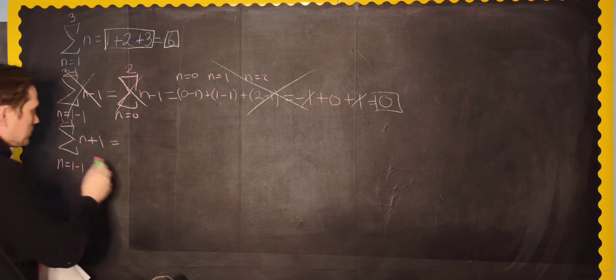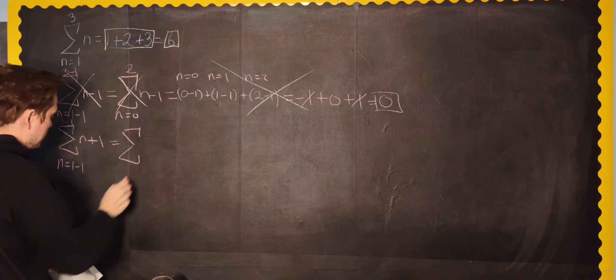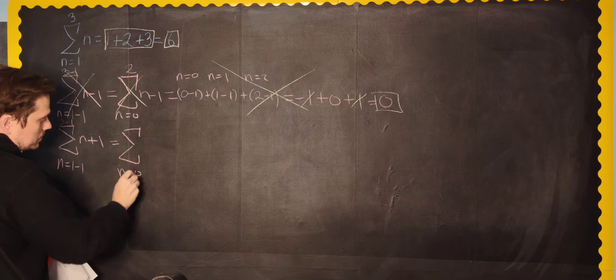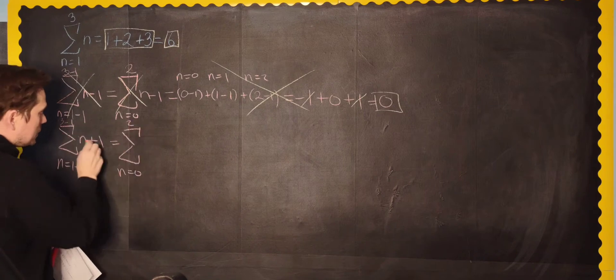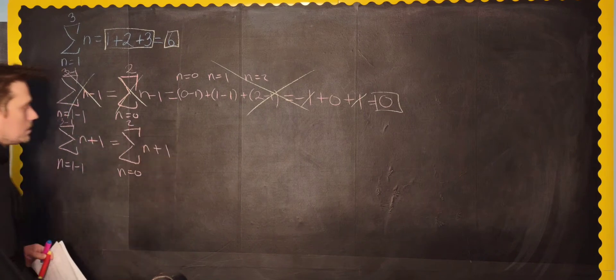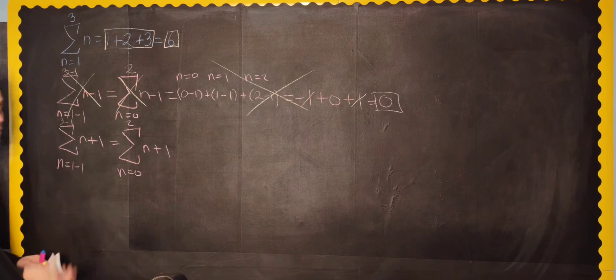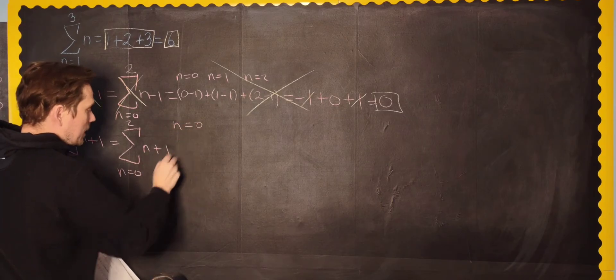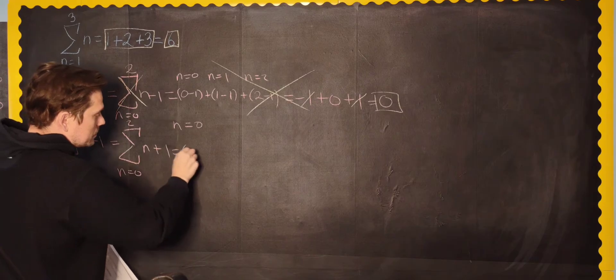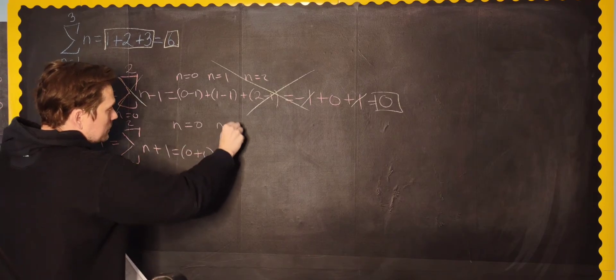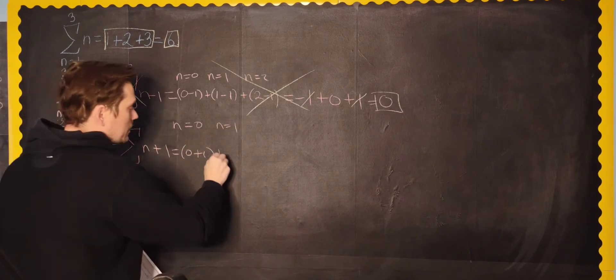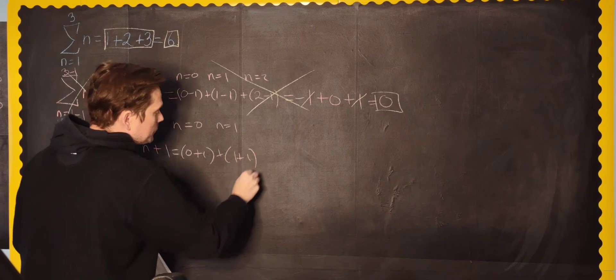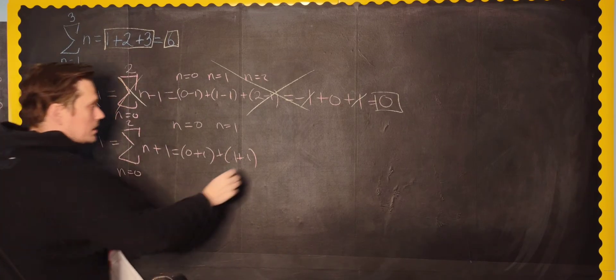You can do n equals 1 minus 1. Again, subtracting 1 from the bottom. Up top, you can do 3 minus 1 right here. And then in the expression, you have to do the opposite of what you do to the value. So instead of doing n minus 1, do n plus 1. The opposite. And now when you work with this, let's simplify it. So this is the summation. This is now n equals 0. And this is going up to positive 2. And the expression is n plus 1.